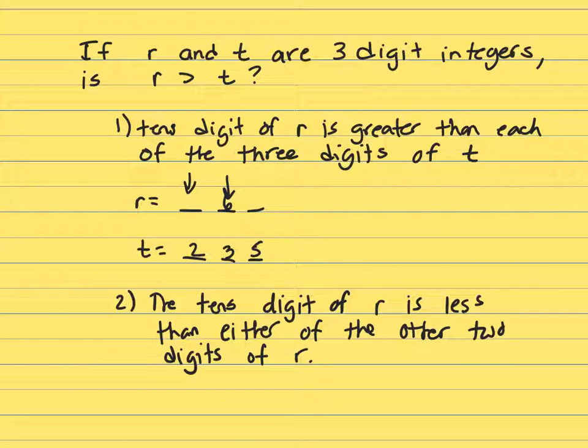We don't know what this place is here. This might be a one, or it might be a seven. So, sometimes R is greater than T, and sometimes it's not. So, clue one does not work by itself.